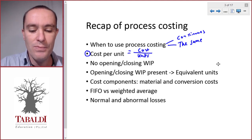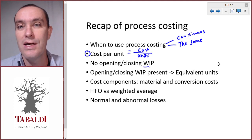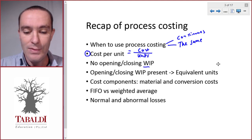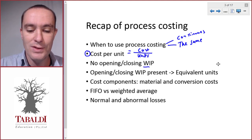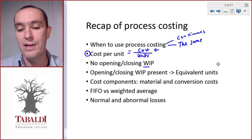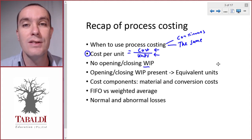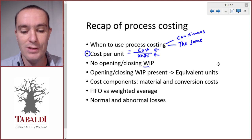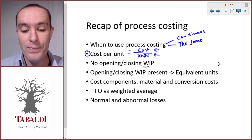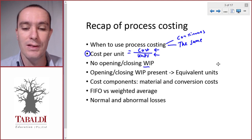That's all it is — it's the cost per unit that we try to calculate. Now if there's no opening and closing work in process, in other words if we don't have any incomplete units at the start or end of that specific period, then it's going to be easy. We just take all the costs we incurred for the period divided by all the units that were started and completed during the period.